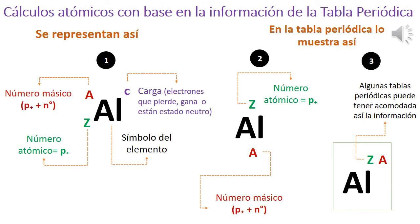Antes de iniciar con los cálculos atómicos, se recomienda tener a la mano una tabla periódica. Es importante conocer cómo se representan los átomos. Tomando como ejemplo un átomo de aluminio: A es el símbolo del número másico, que es la cantidad de protones más neutrones. Z representa el número atómico, que es igual al número de protones. C representa la carga, que indica los electrones que se pierden, se ganan, o si el elemento está en estado neutro.